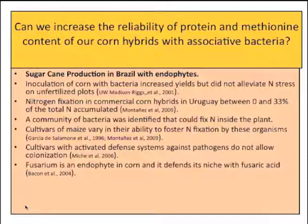There were some different examples of why this might be an interesting way to go. Sugar cane production in Brazil basically occurs with very little fertilizer or no fertilizer, because there are bacteria that live inside the plant and actually fix nitrogen. That's a much better deal than what we have here for producing ethanol, because they don't need the nitrogen fertilizer in order to get the sugar cane, which is used to make ethanol.